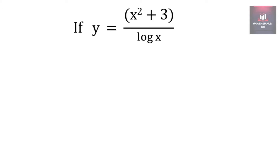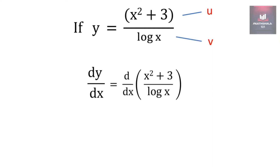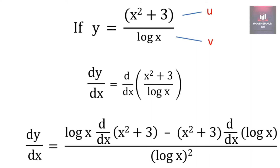Let's solve another example. Suppose y is x square plus 3 upon log(x). Applying the u upon v rule, x square plus 3 will become u and log(x) will become v. The derivative of y with respect to x will be d/dx of (x square plus 3) upon log(x), which by the u upon v rule is: v times the derivative of u minus u times the derivative of v, upon v square.